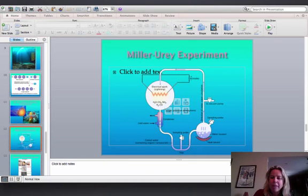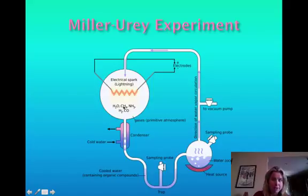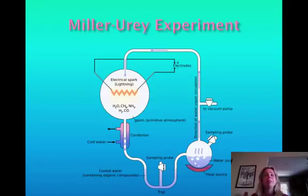In the Miller-Urey experiment, using Oparin and Haldane's work, they assembled all of the elements they thought were present in the early atmosphere into their fake atmosphere. Water vapor came up and rained down, and an electrical spark signified lightning. When that spark ignited those elements and the water rained down and they collected it, they found organic compounds — amino acids and nucleotides. That's how they think the building blocks were actually formed, through lightning and the proper elements.